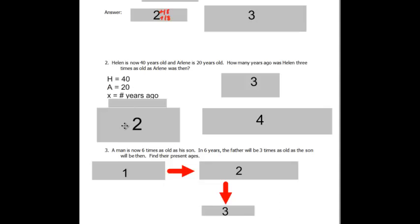Helen is now forty years old and Arlene is twenty years old. How many years ago was Helen three times as old as Arlene was then? This one's a different problem that you might think is a little difficult, but let's just work through it. They're giving us now Helen and Arlene's age. This is now. I don't know how many years ago, and we let x equal whatever we are trying to find.